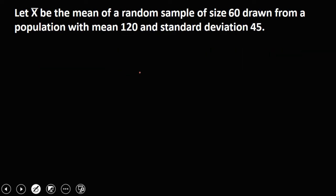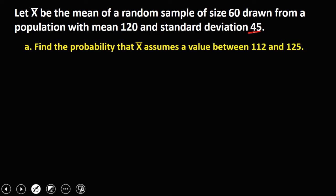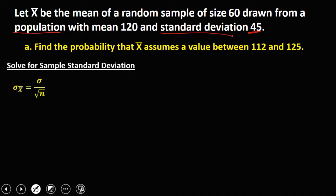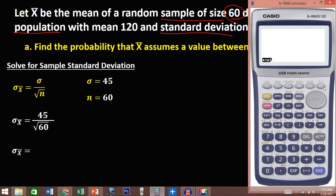We have this given: let the sample mean be the mean of a random sample of size 60 drawn from a population with mean 120 and standard deviation 45. First, we convert the population standard deviation to the sample standard deviation: 45 divided by the square root of 60, which equals 5.895.